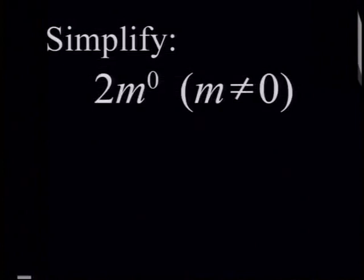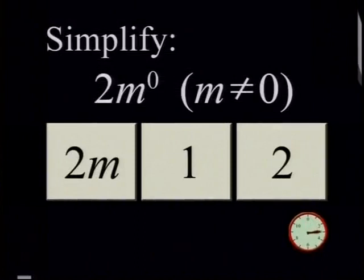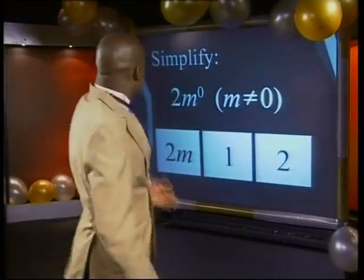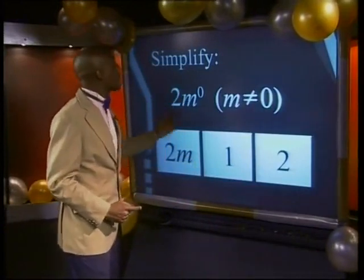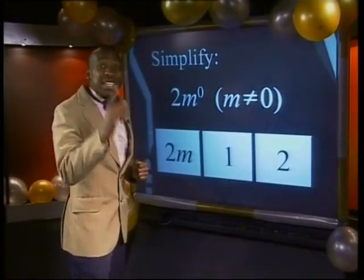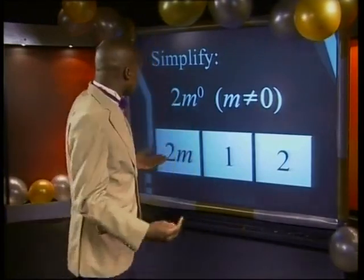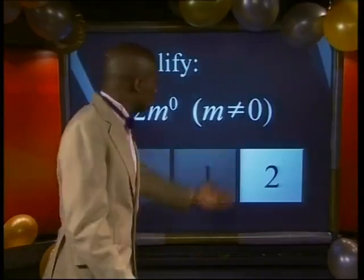The next one might look similar, but take a careful look: 2 multiplied by m to the power of 0. This is your last chance! Did you notice the difference? The 2m is not in brackets, so only the m is raised to the power of 0. Any number raised to the power of 0 is 1, so this is the same as 2 multiplied by 1, which gives us an answer of 2.